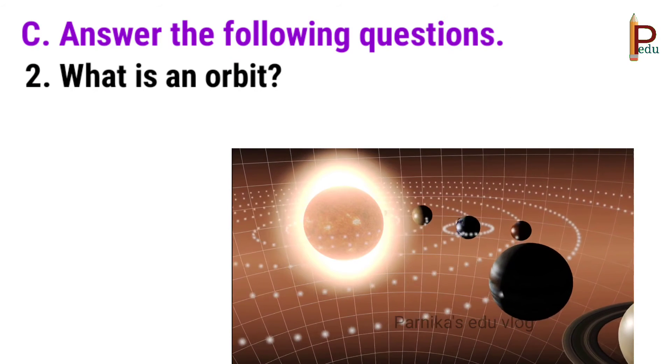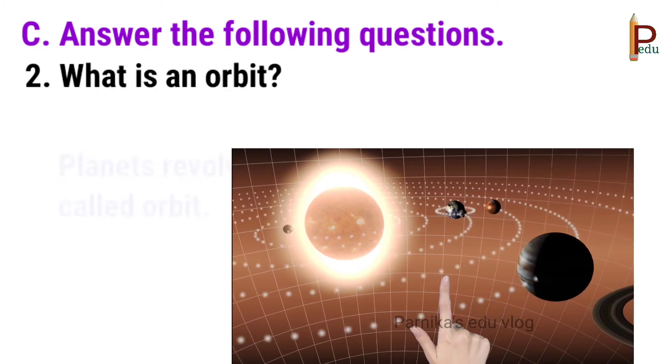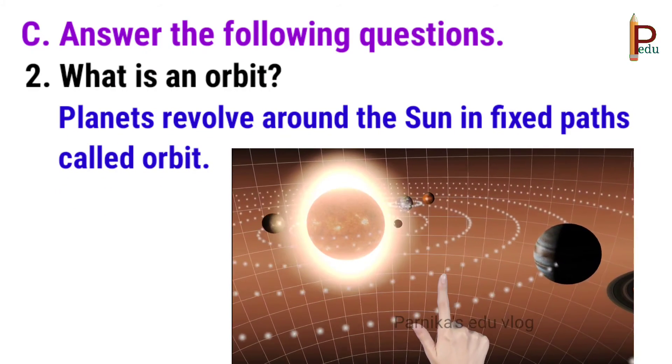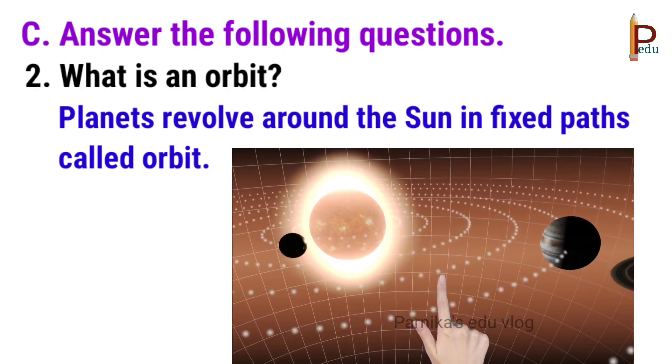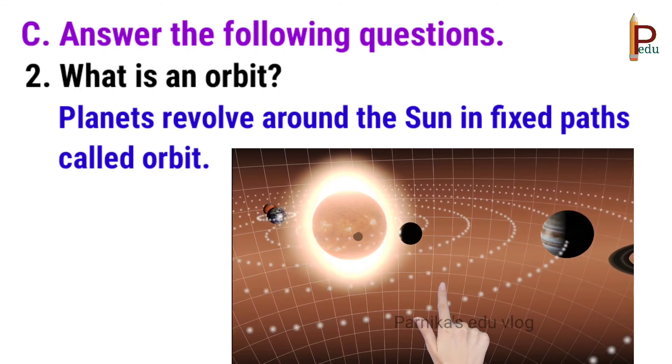Second one, what is an orbit? Answer, planets revolve around the sun in fixed paths called orbit.